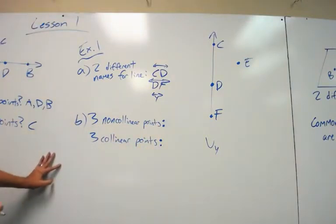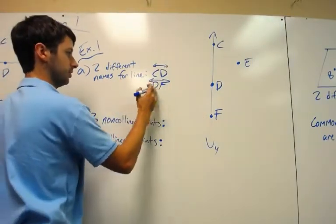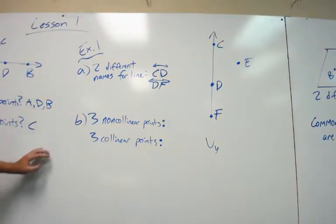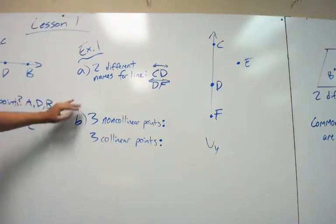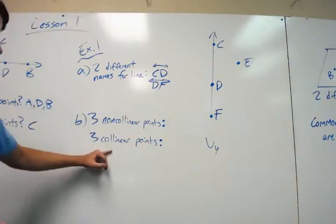Although it's probably going to be easier and more detailed to use one of these two. So I would stick to using capital letters most of the time. So those are two different names for the line. Now, let's actually do this one first. Three collinear points.